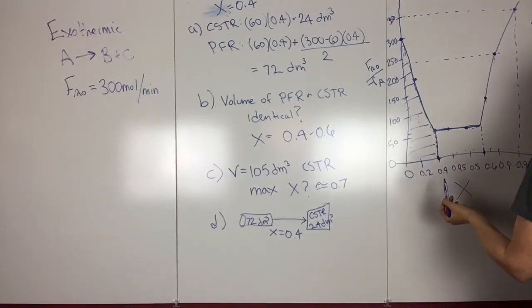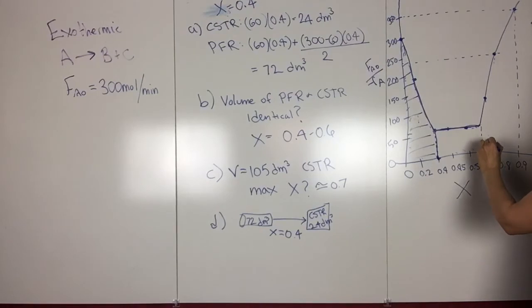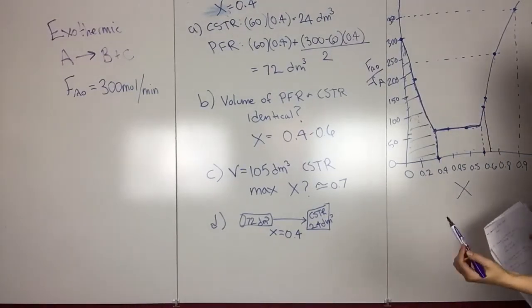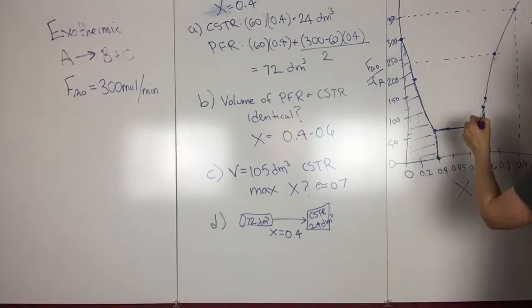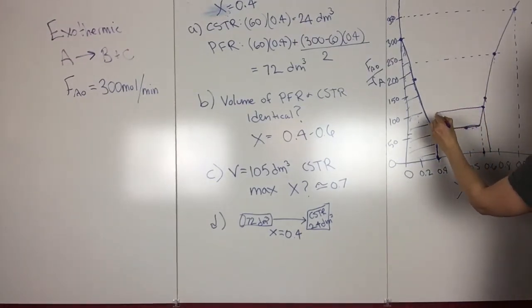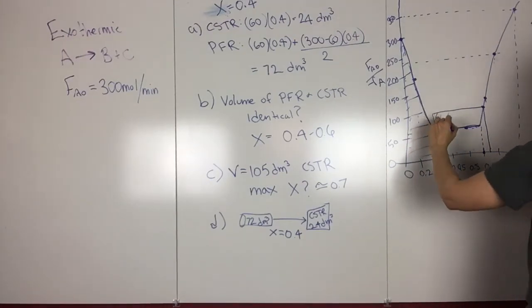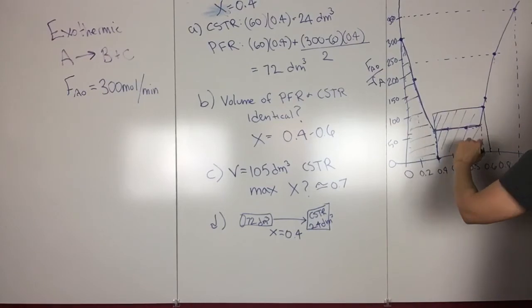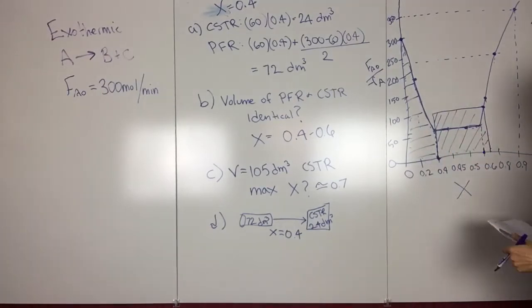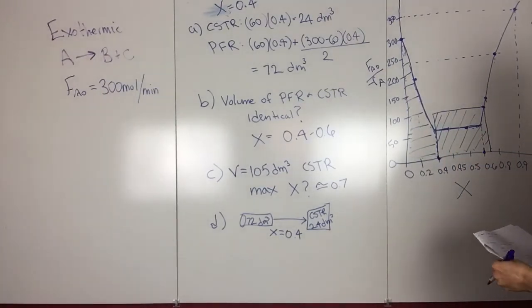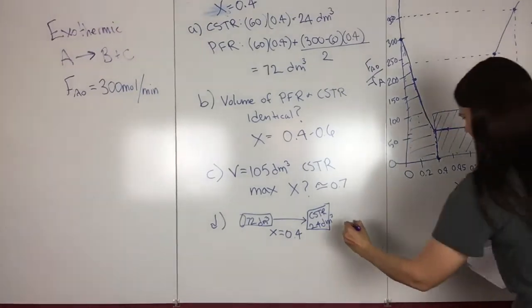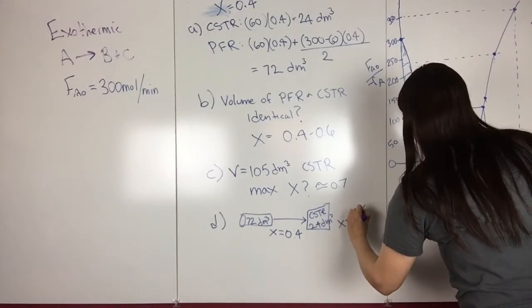And then for the CSTR, we kind of need to do this trial and error thing again, where we figure out where on this curve, from 0.4 to somewhere along here, multiplied by something over here, it equals 24. So it turns out the answer is around 0.65, and once again, you would arrive at that through trial and error, but your PFR volume would look like this, or I mean, your CSTR would look something like this. And then this was X equals 0.65.